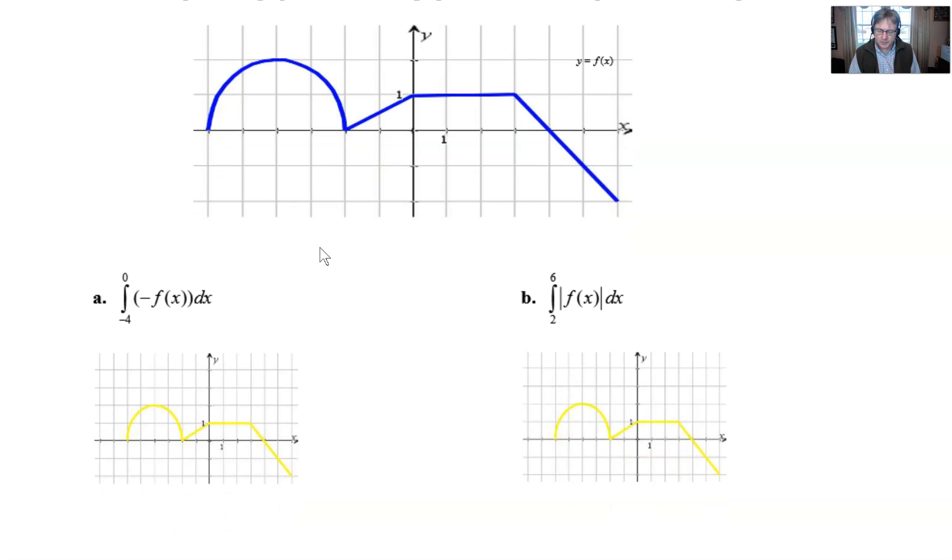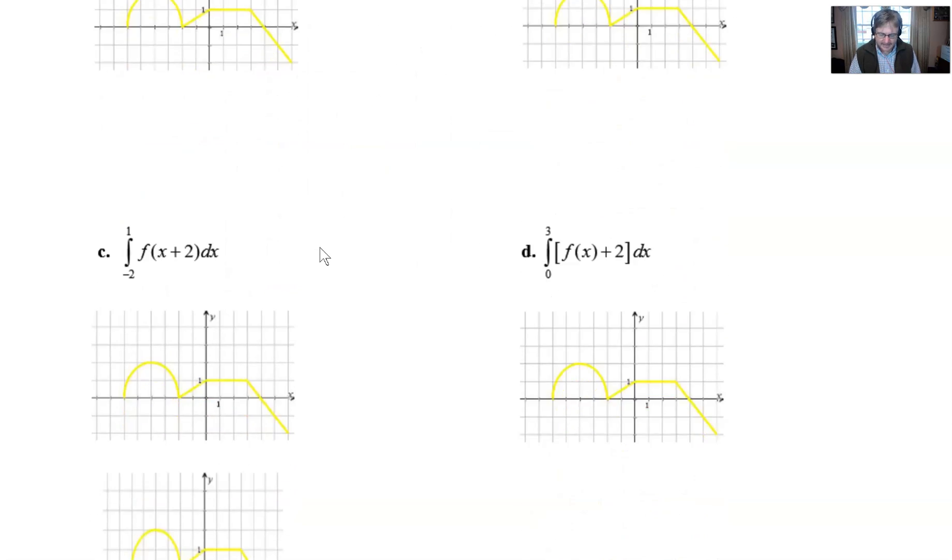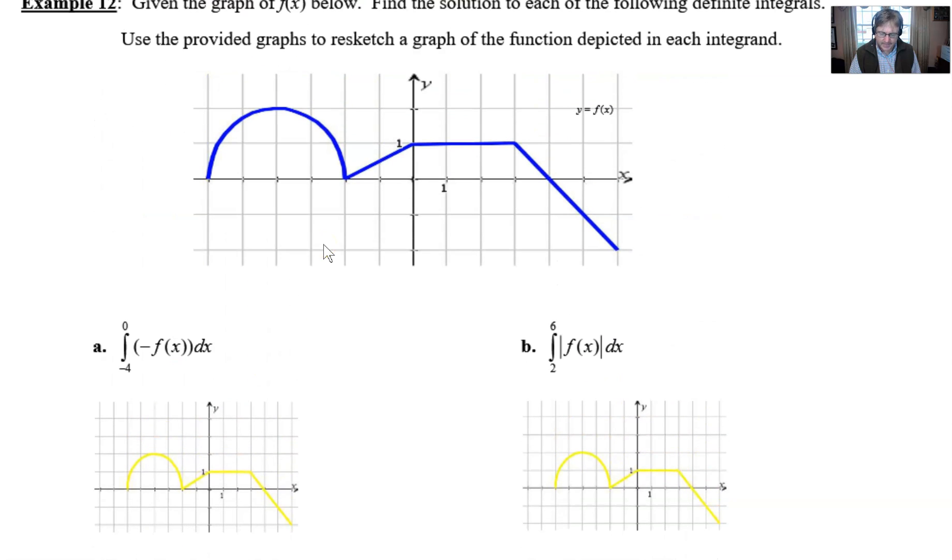As you can see, this blue curve consists of a semicircle and three straight line segments, and that's really important because that will allow us to use geometry. I've gone ahead and recreated the sketch of that curve in yellow so that you could easily draw on top of it and not confuse the two graphs. For part a, we're taking the definite integral from negative 4 to 0 of negative f(x).